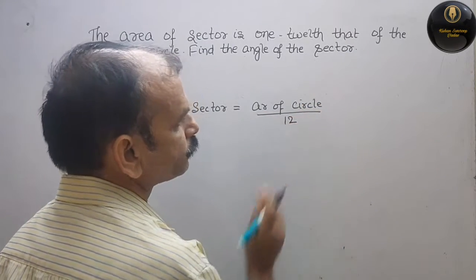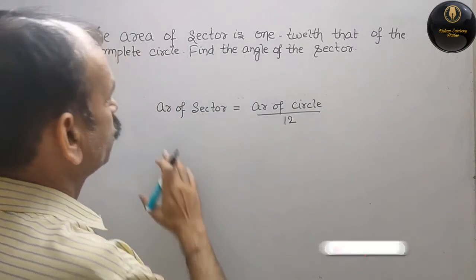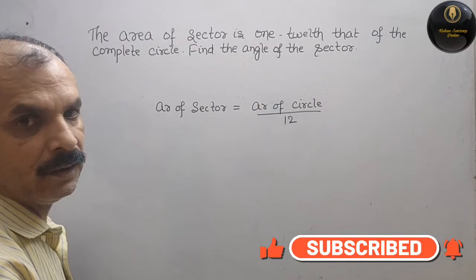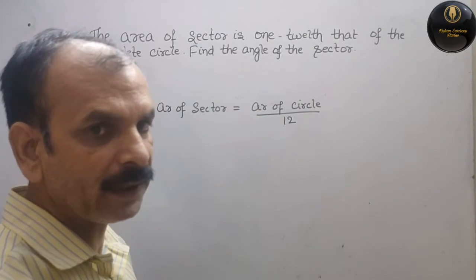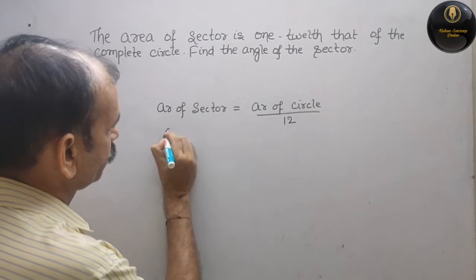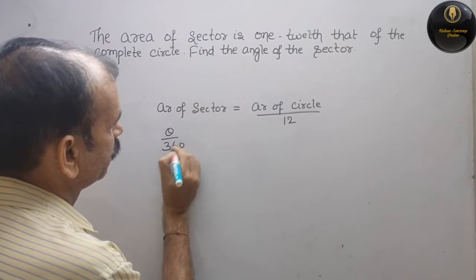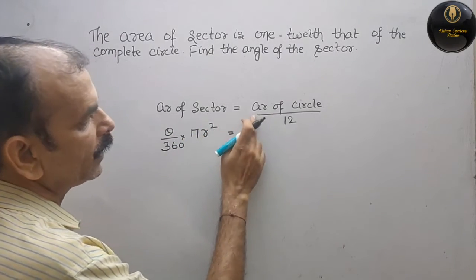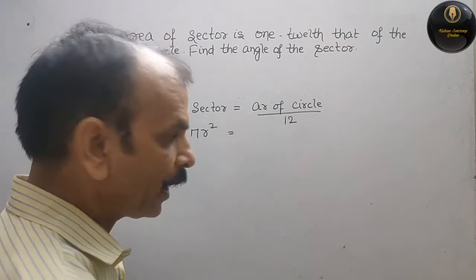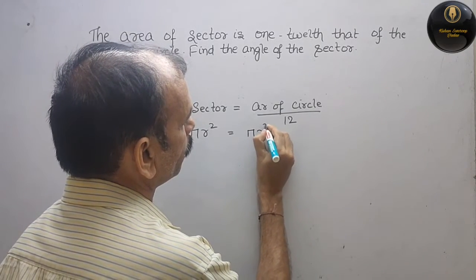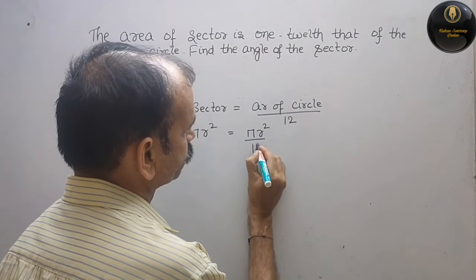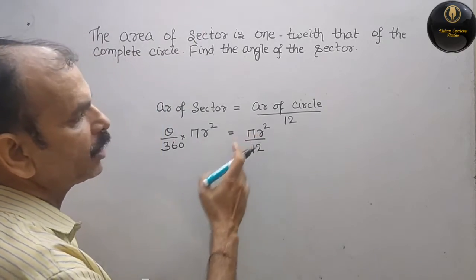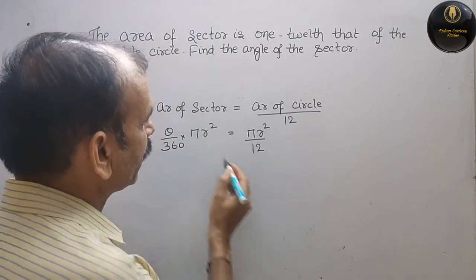We will find the angle using the area of a sector formula. Area of a sector equals theta by 360 into pi r squared, and the area of a circle is pi r squared by 12. Now you can see pi r squared appears on both sides, so you can directly cancel it.